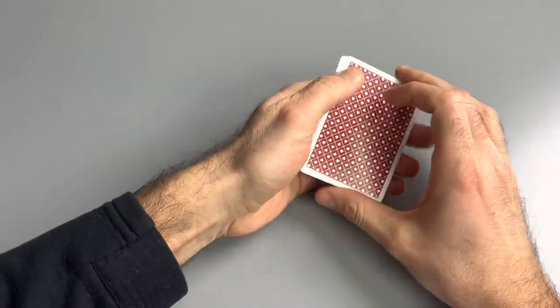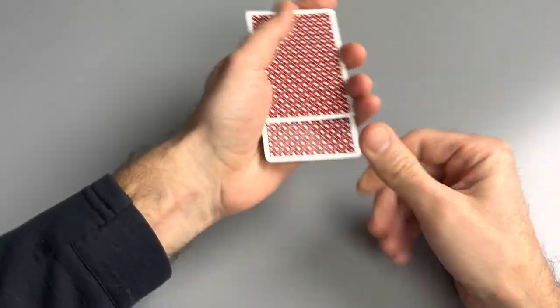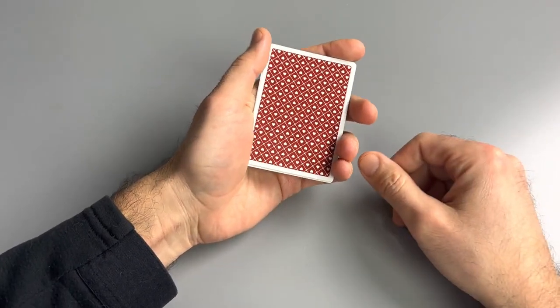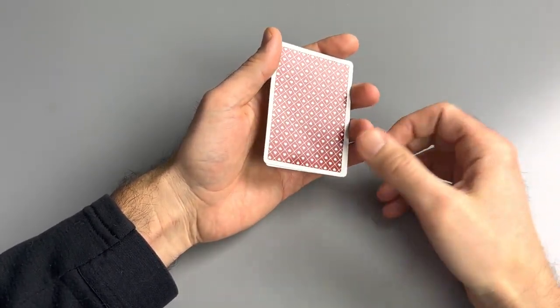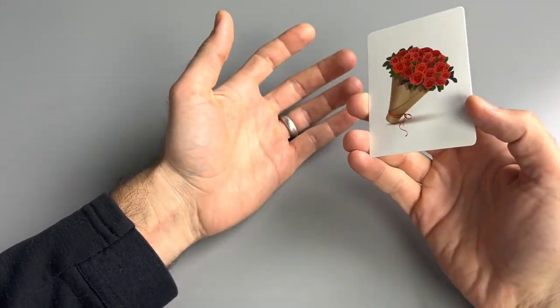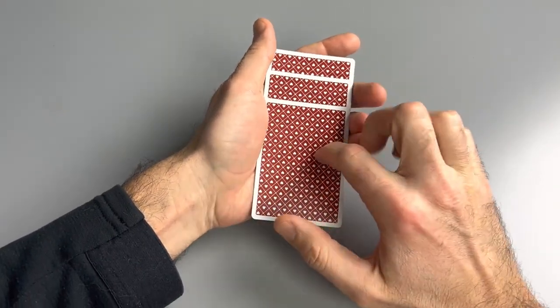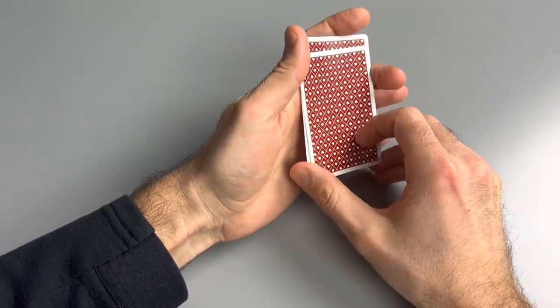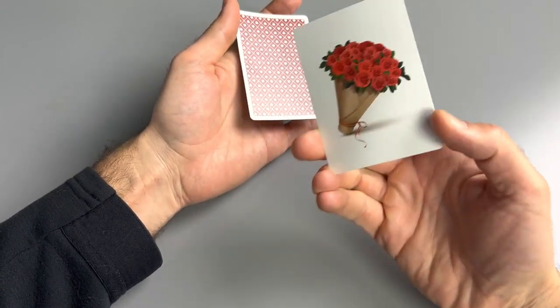So what I do is I'll mix up the cards and I'll call my wife over and she'll pick. Now if she picks the bottom, she'll get flowers. If she picks the top card, let's see, she'll get flowers.